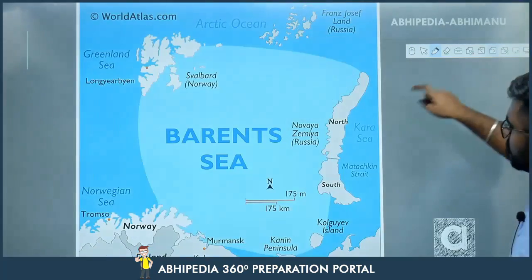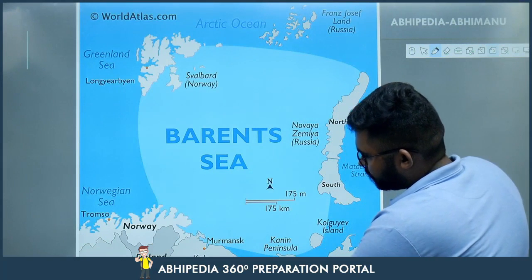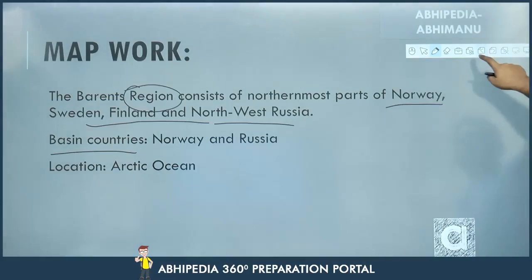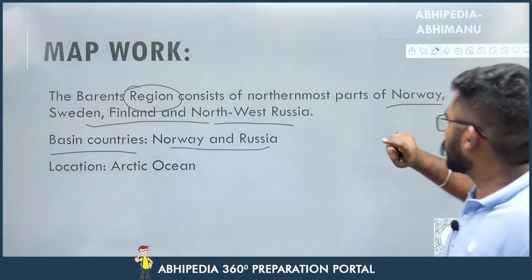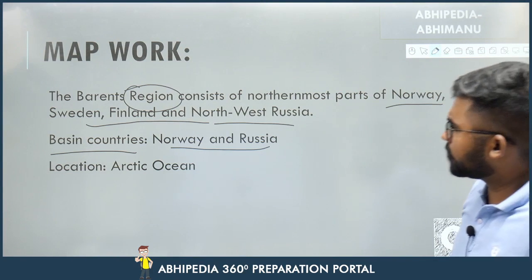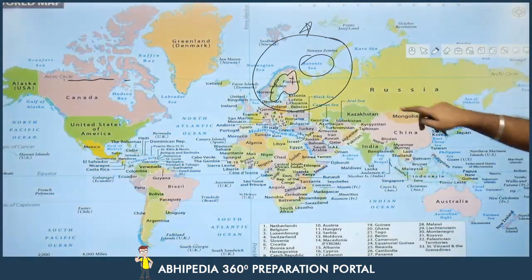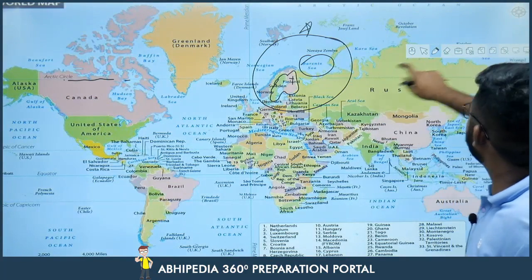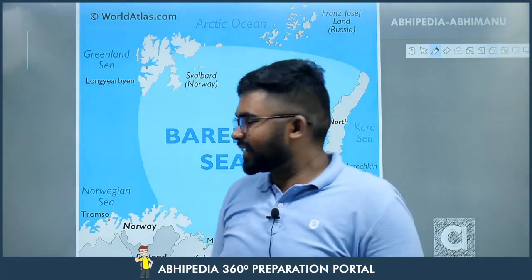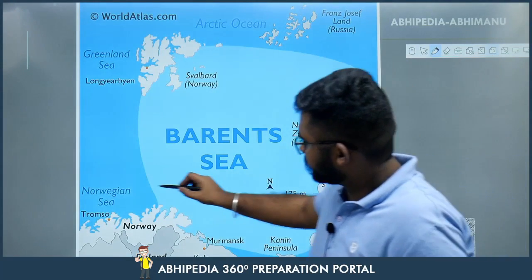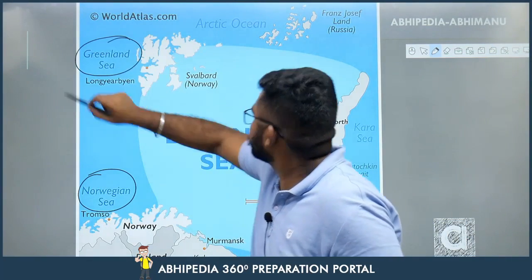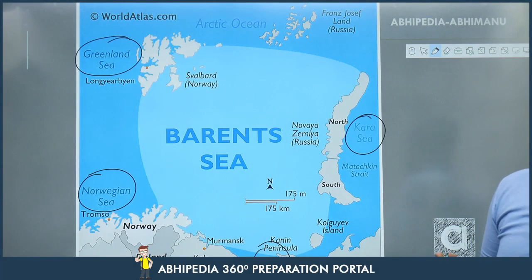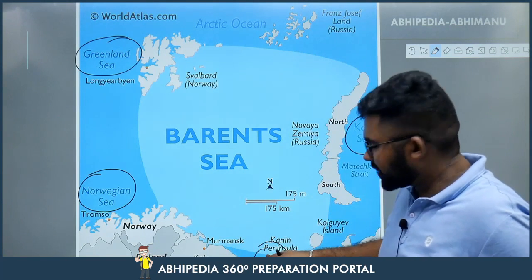In the close-up map, you can see Norway extending northward and Russia occupying the large surrounding area. So basin countries with coastlines on the Barents Sea are Norway and Russia. The Barents Sea is surrounded by several seas: the Norwegian Sea, the Greenland Sea, the Kara Sea, and the White Sea — the White Sea is at the bottom of the map.